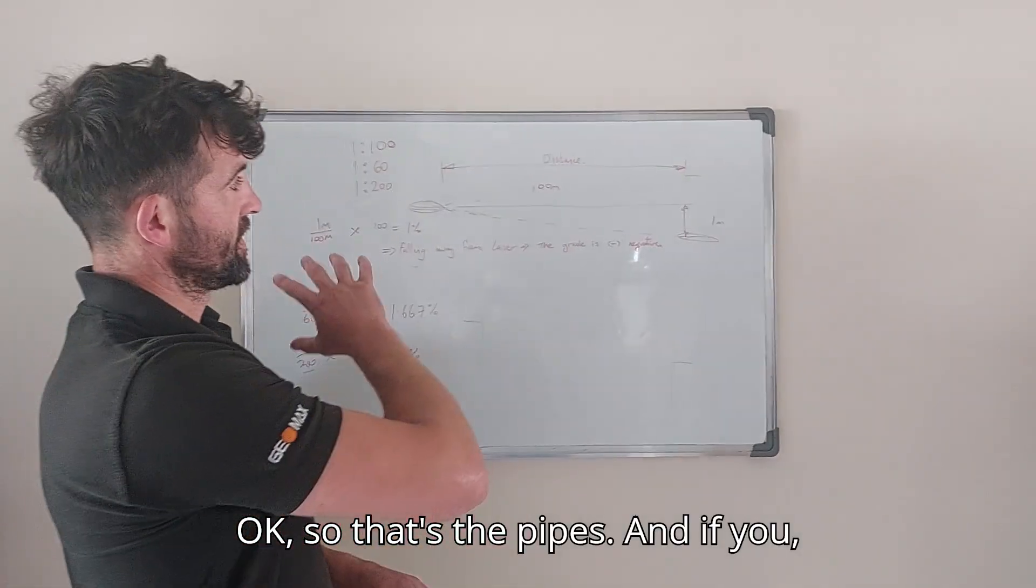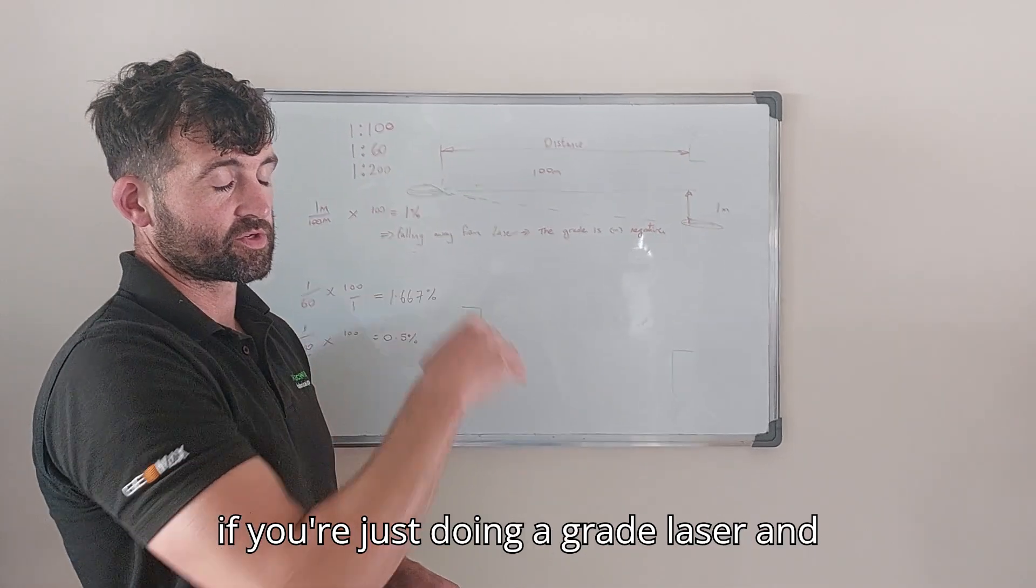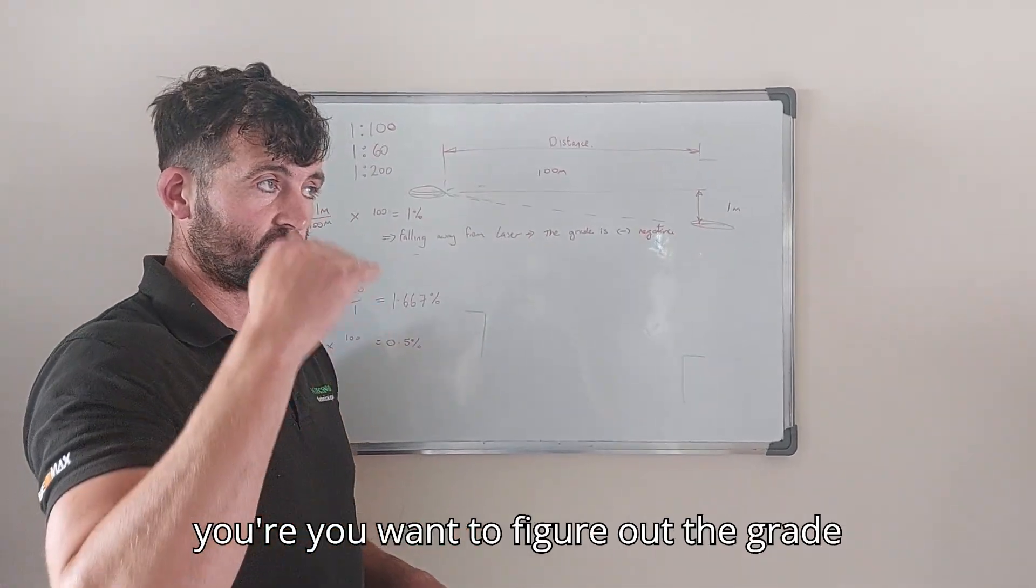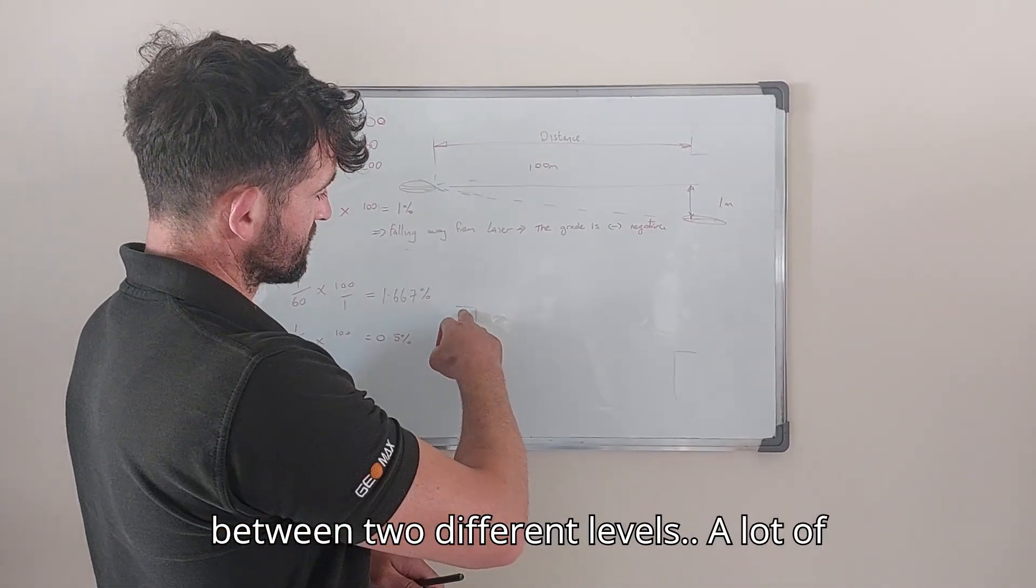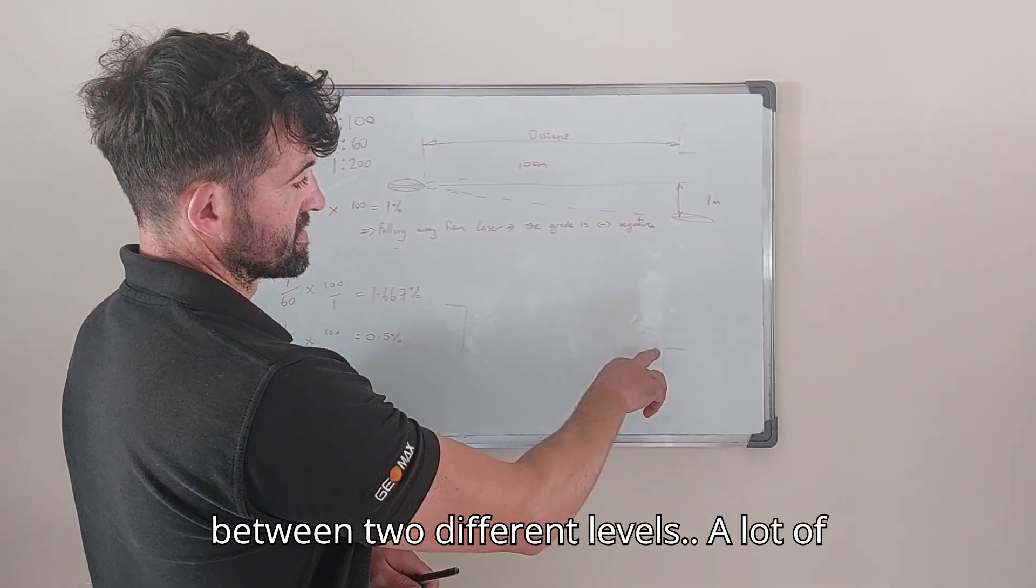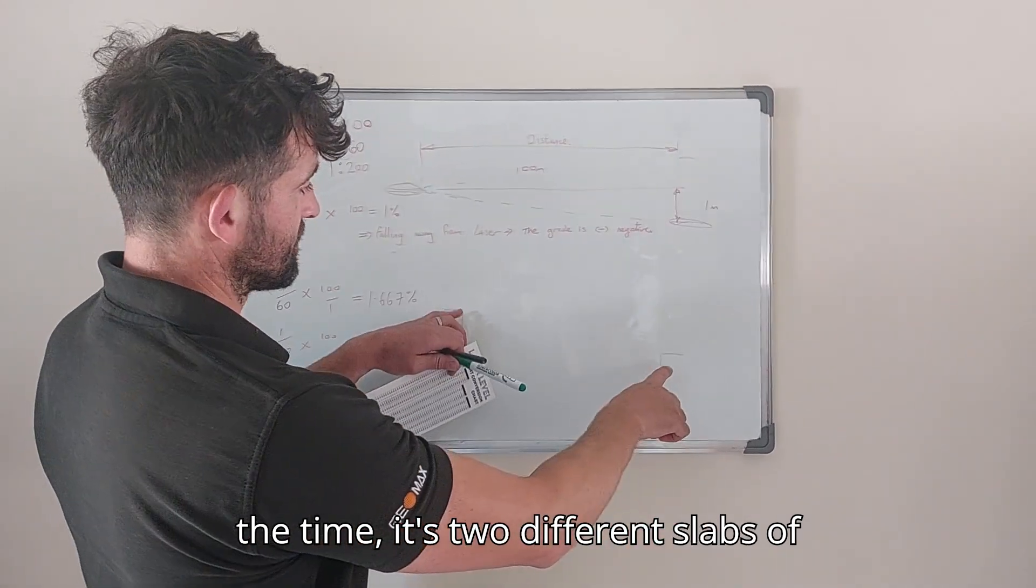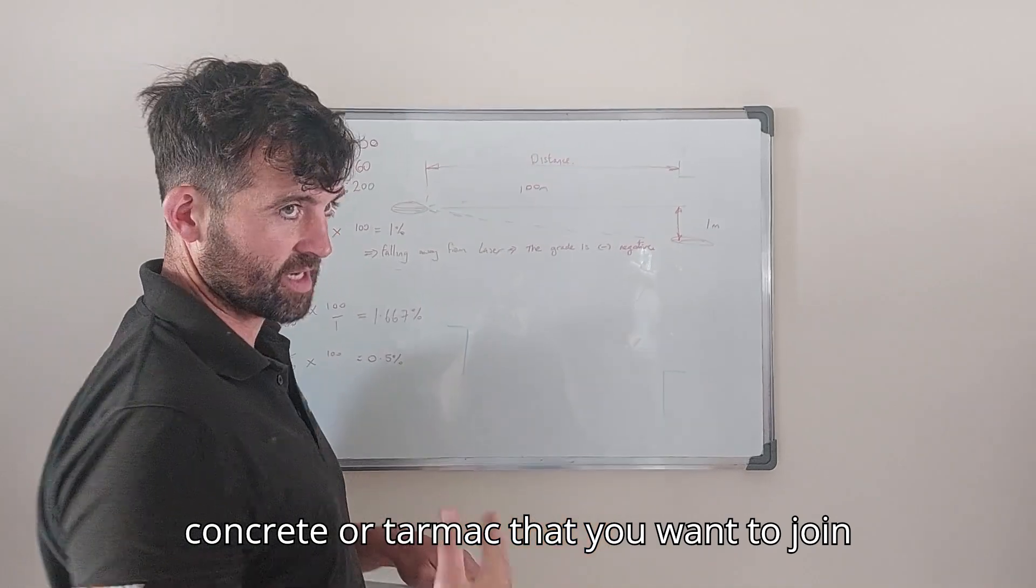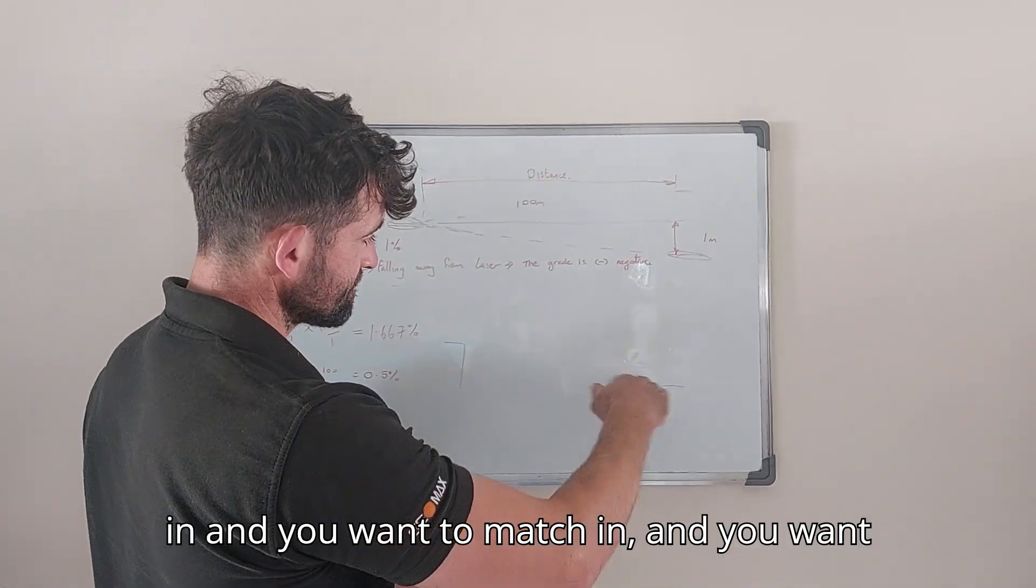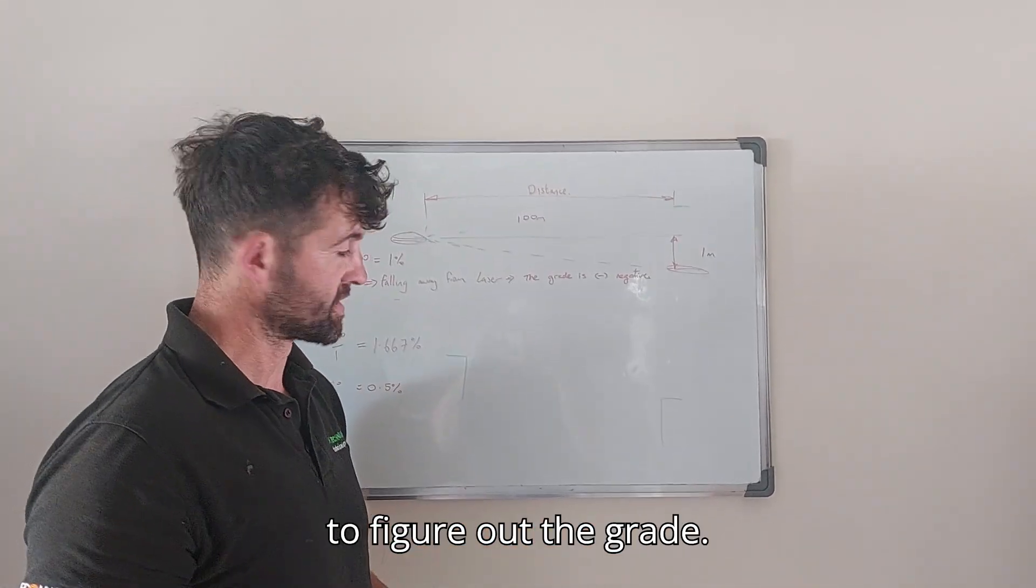Okay, so that's the pipes. If you're just doing a grade laser and you want to figure out the grade between two different levels, a lot of the time it's two different slabs of concrete or tarmac that you want to join in and match in and you want to figure out the grade.